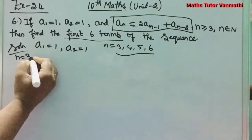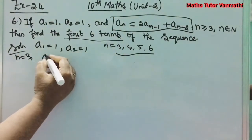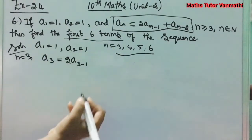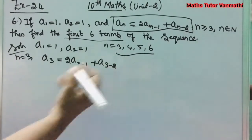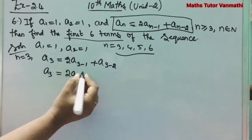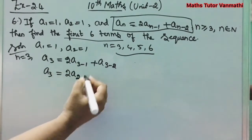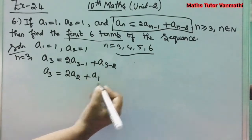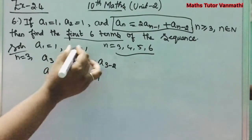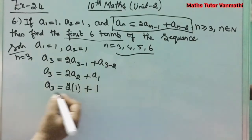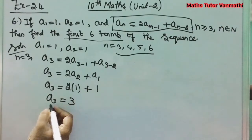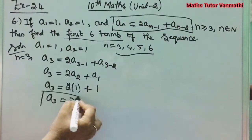For n = 3: a_3 = 2a_(3-1) + a_(3-2) = 2a_2 + a_1 = 2×1 + 1 = 3. So a_3 = 3.